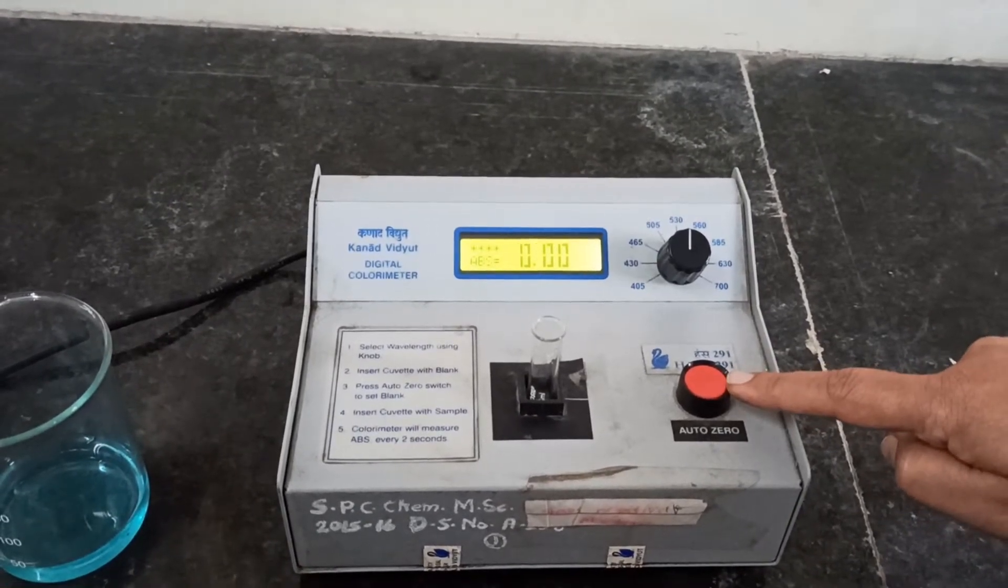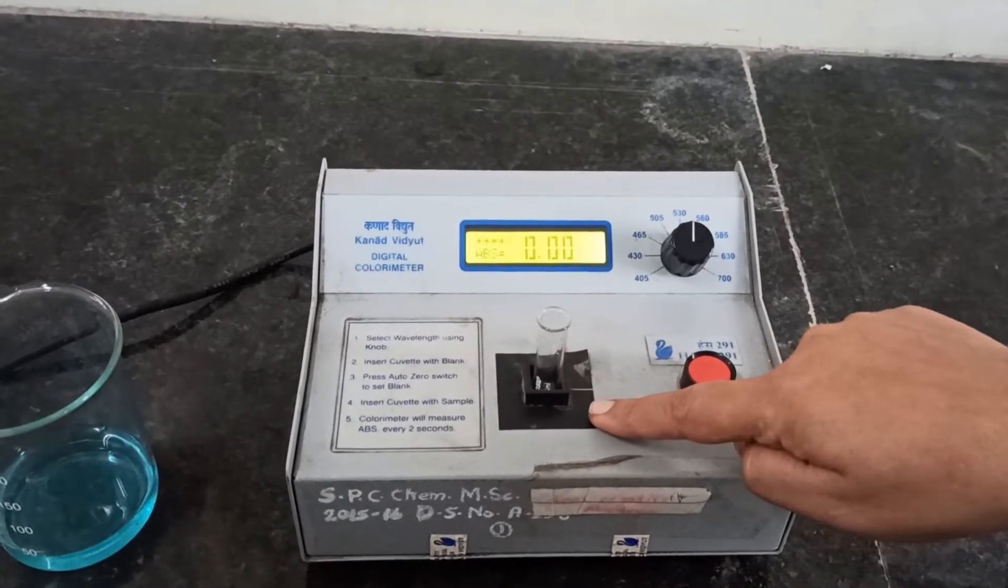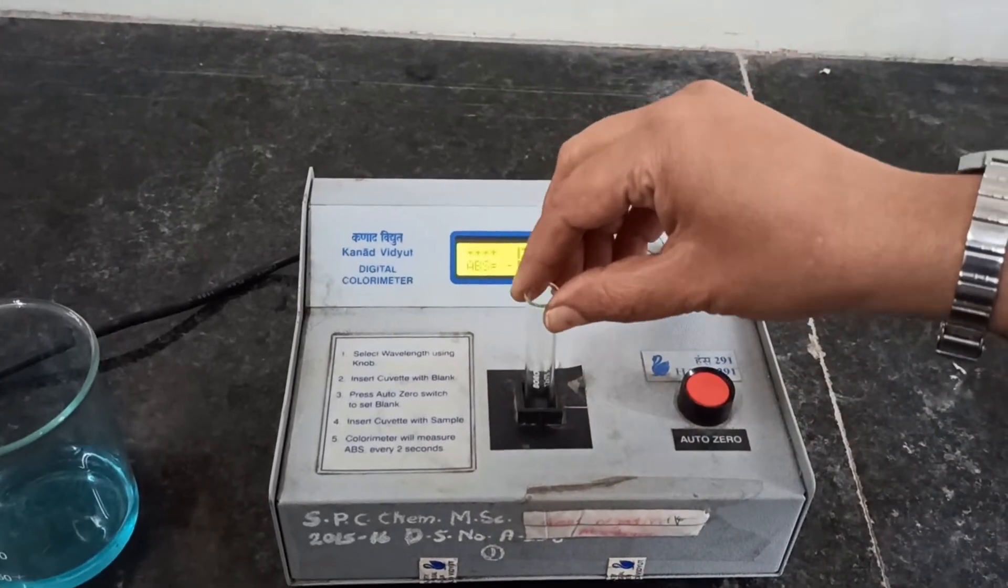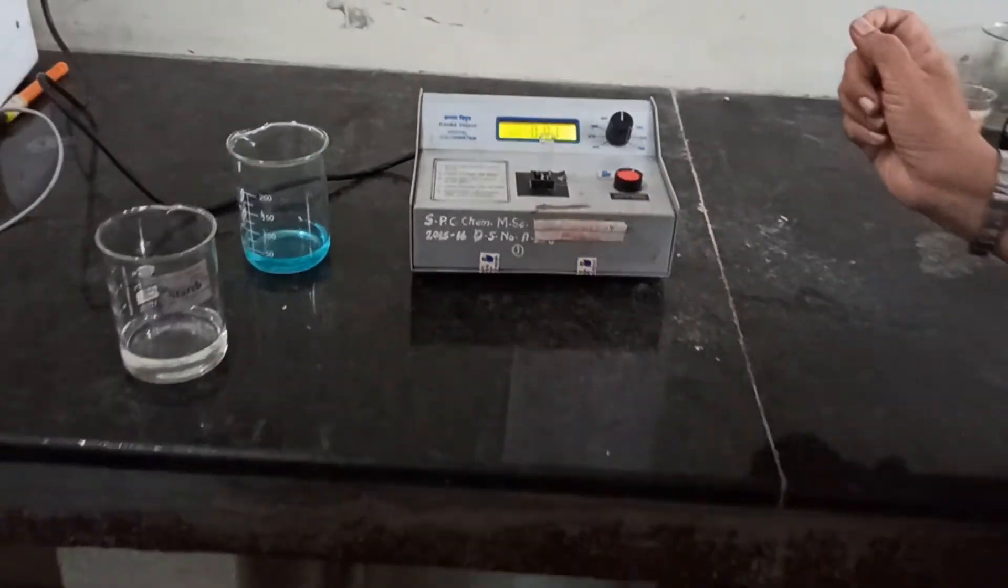This is an auto button which will be utilized to set the absorbance to zero. If it is not adjusted, we can adjust it by the auto zero push button. This is the place where you can put your sample solution in a cuvette. Now we will show you how to standardize the instrument.